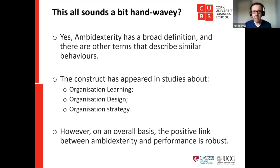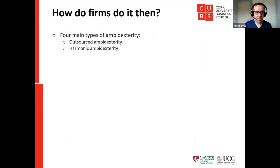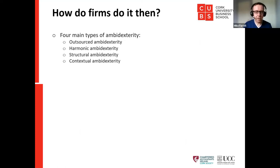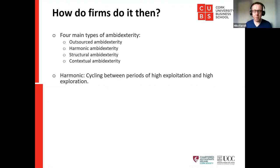Now that we've established credibility for ambidexterity, how do firms actually do it? There are four main types: outsourced ambidexterity, harmonic ambidexterity, structural ambidexterity, and contextual ambidexterity. Harmonic means cycling between periods of high exploitation and high exploration — Intel were well known for this: build something new, then refine and make it efficient, then explore again. The problem is it requires too many resources, and organisational transformation is extremely difficult to manage.